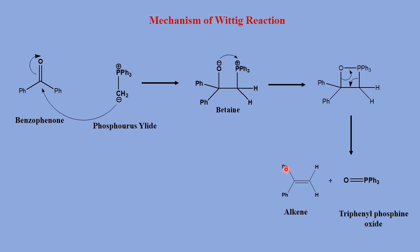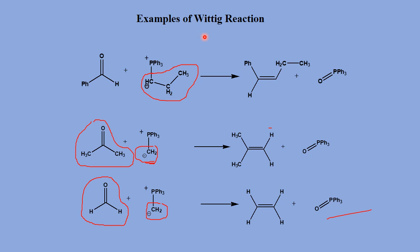Here are some examples of Wittig reactions. When benzaldehyde reacts with a phosphorus ylide — where one of the hydrogens is replaced by an ethyl group — there is formation of an alkene. The oxygen in the reactant is replaced by these carbon groups, and there is formation of a double bond.